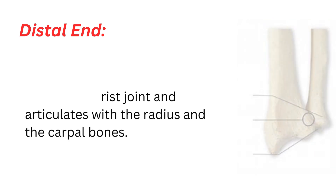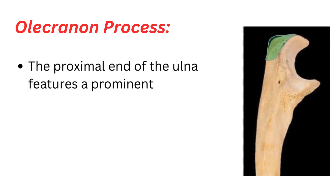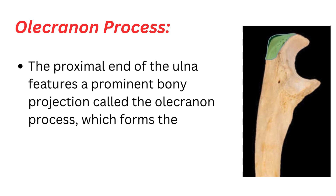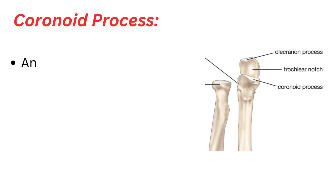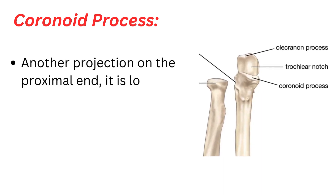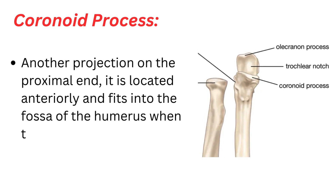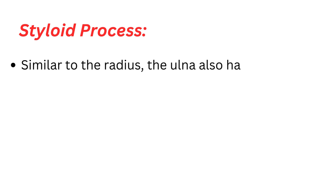Olecranon process: the proximal end of the ulna features a prominent bony projection called the olecranon process, which forms the bony prominence of the elbow. Coronoid process: another projection on the proximal end, located anteriorly, that fits into the fossa of the humerus when the elbow is flexed. Styloid process: similar to the radius, the ulna also has a styloid process at its distal end.